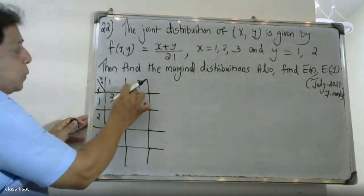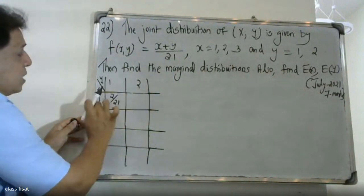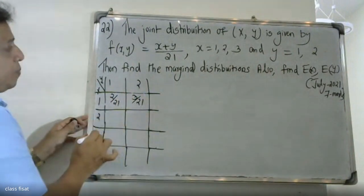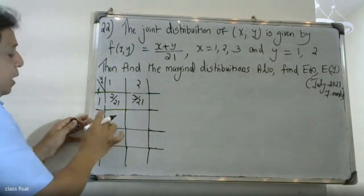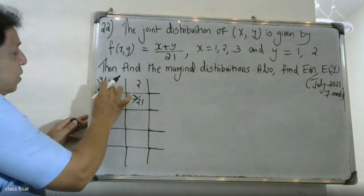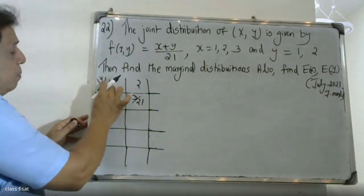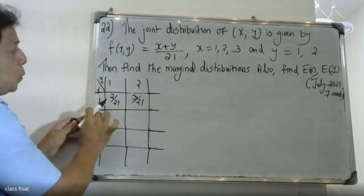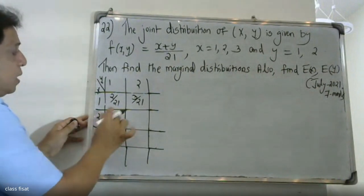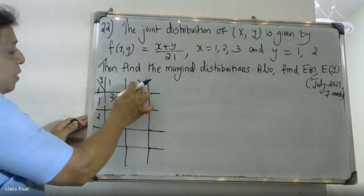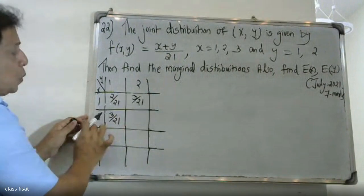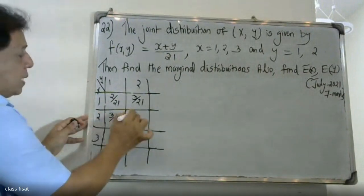When y equals 1 and x equals 1, the value is 3. When y equals 1 and x equals 2, the value is 2, 3. When y equals 2, the value is 4. Filling in each cell using f(x,y) = (x+y)/21.